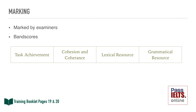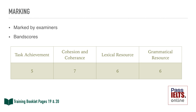Each marking criteria is given a score, but you won't see what score you got for each criteria individually. You will get one overall score which is made up of eight individual scores from task one and task two. As you can see here, the candidate got a five for task achievement, a seven for cohesion and coherence, a six for lexical resource or vocabulary, and a six for grammar, which would give an overall score of six.